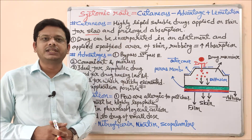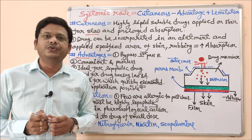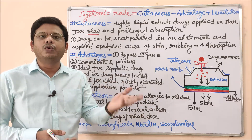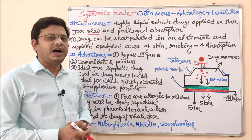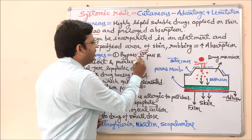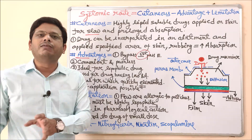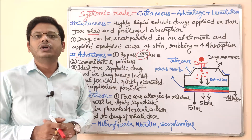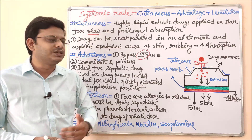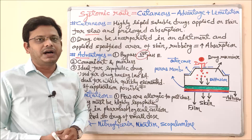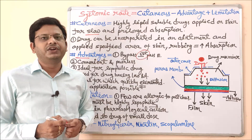Now let's look at the advantages of the cutaneous route compared to oral, rectal, vaginal, and other routes. The first advantage is that it bypasses first-pass metabolism. First-pass metabolism causes degradation of the drug in the liver. To avoid that degradation, we give certain drugs via routes that bypass the liver for initial metabolism. The cutaneous route provides this advantage.